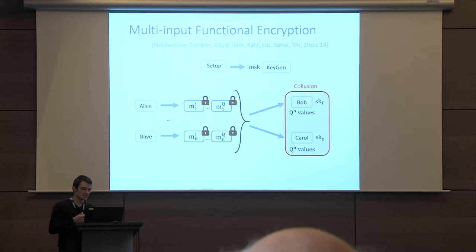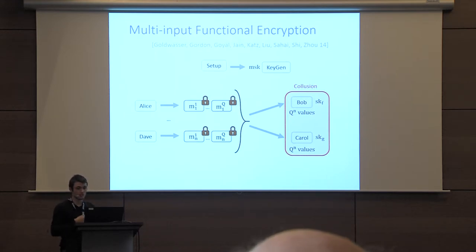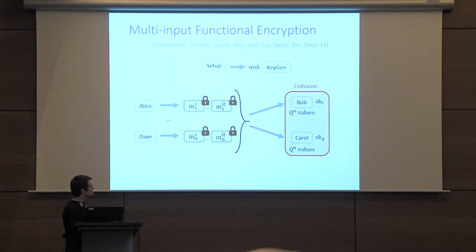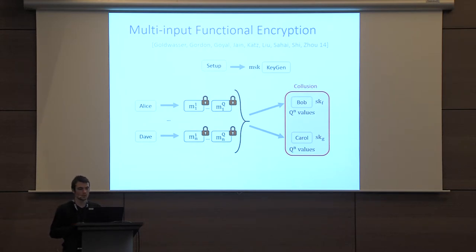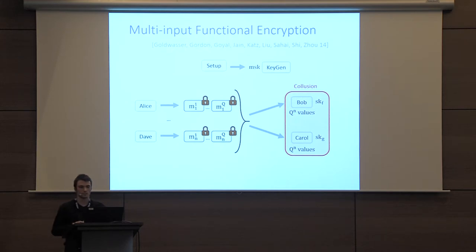This could be problematic to have such huge leakage in general. But in our case, this exponential number in N will in fact be linear in N. For the restricted class of functions we are considering, this is actually Q times N. So this is how we avoid this issue.